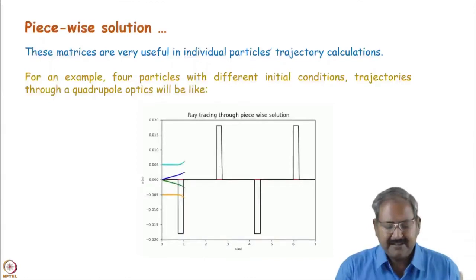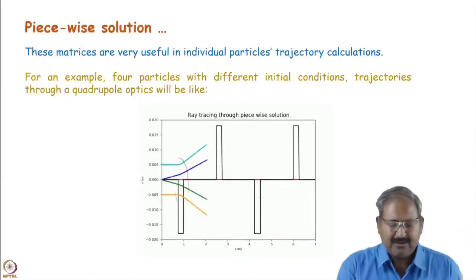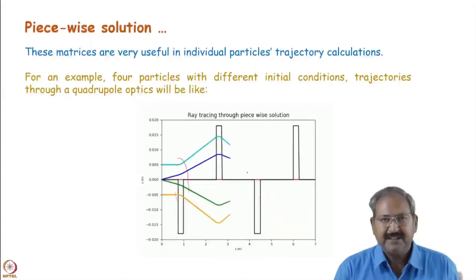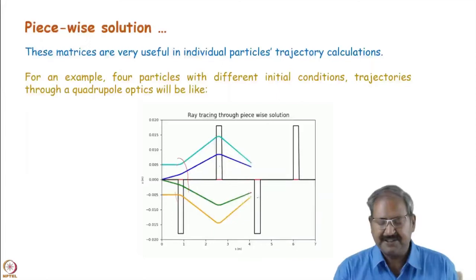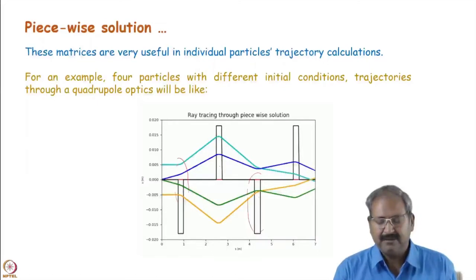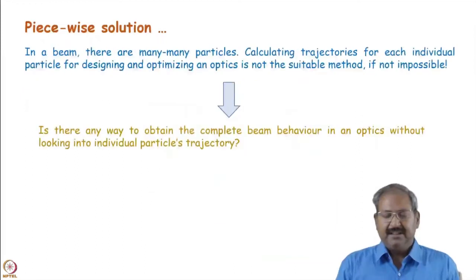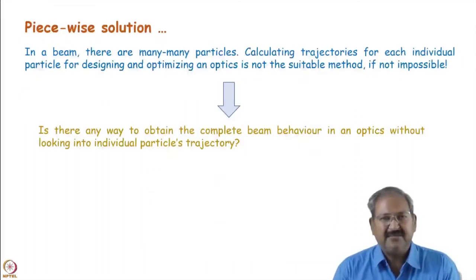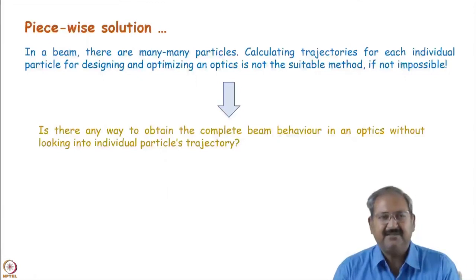This arrangement provides overall focusing if we choose carefully the strength of the quadrupoles as well as the distance between them. As the trajectory reaches each magnet, it defocuses and then focuses, coming towards the design trajectory. Again a defocusing magnet produces its effect, and lastly a focusing magnet brings all trajectories again towards the design trajectory. So overall you will have a focusing solution for this arrangement.